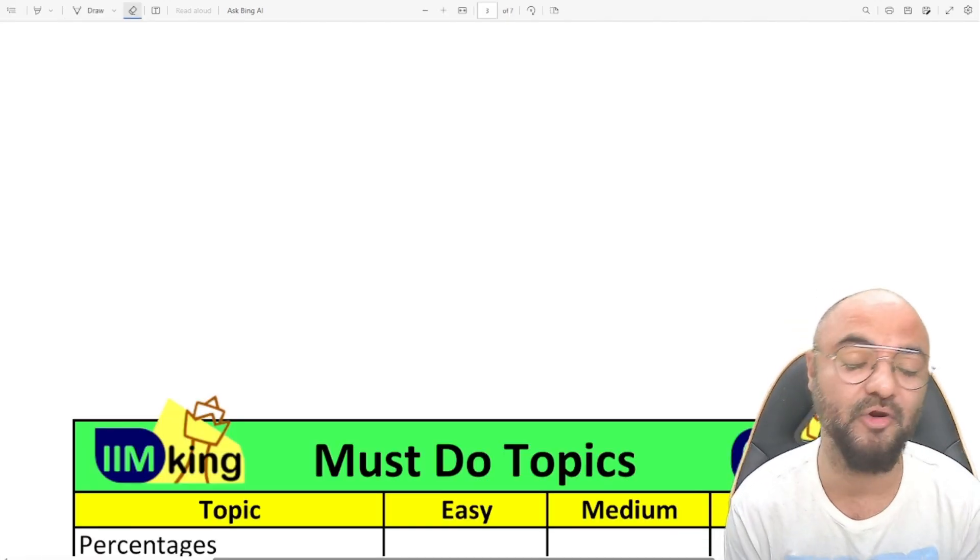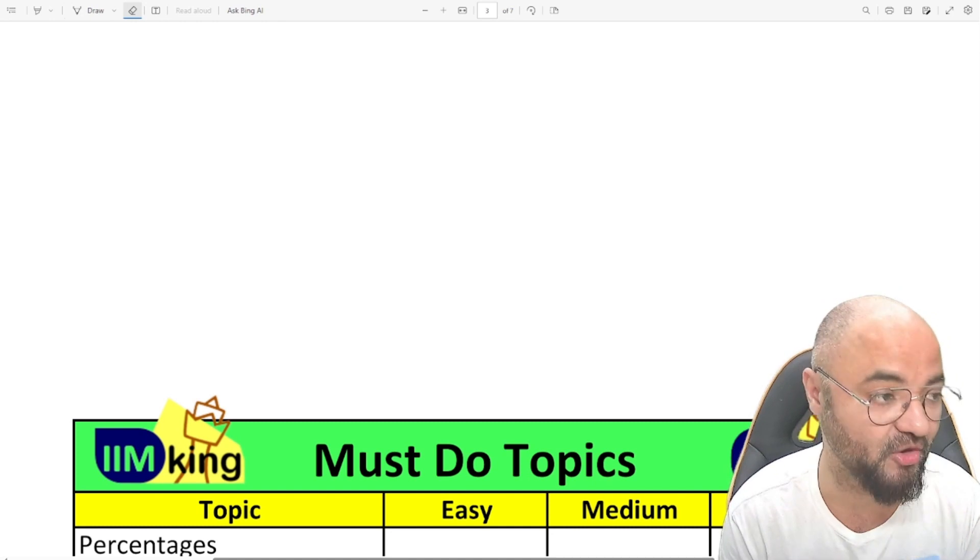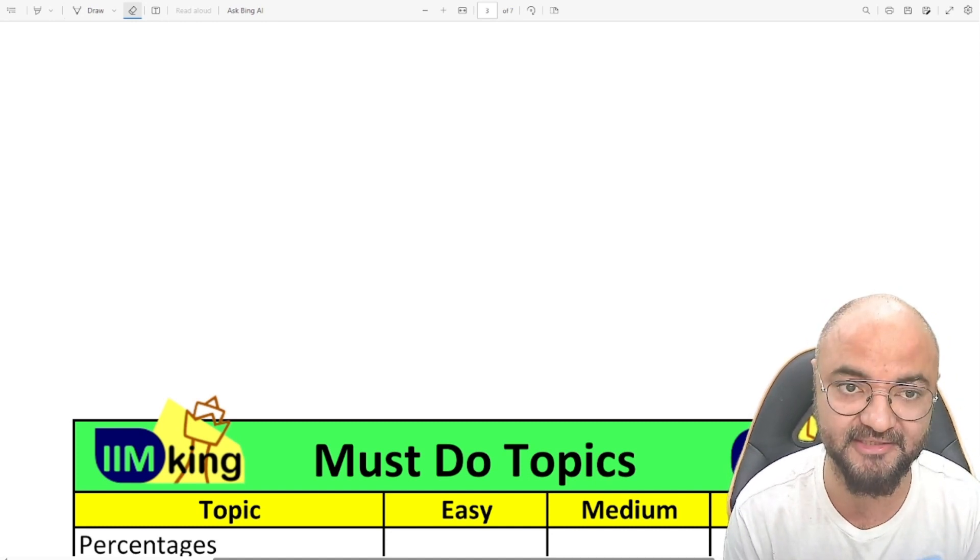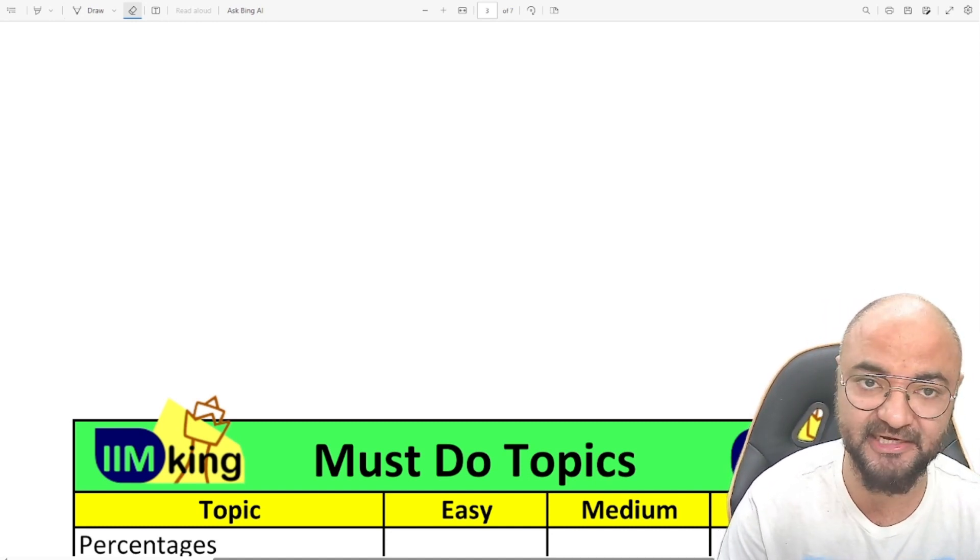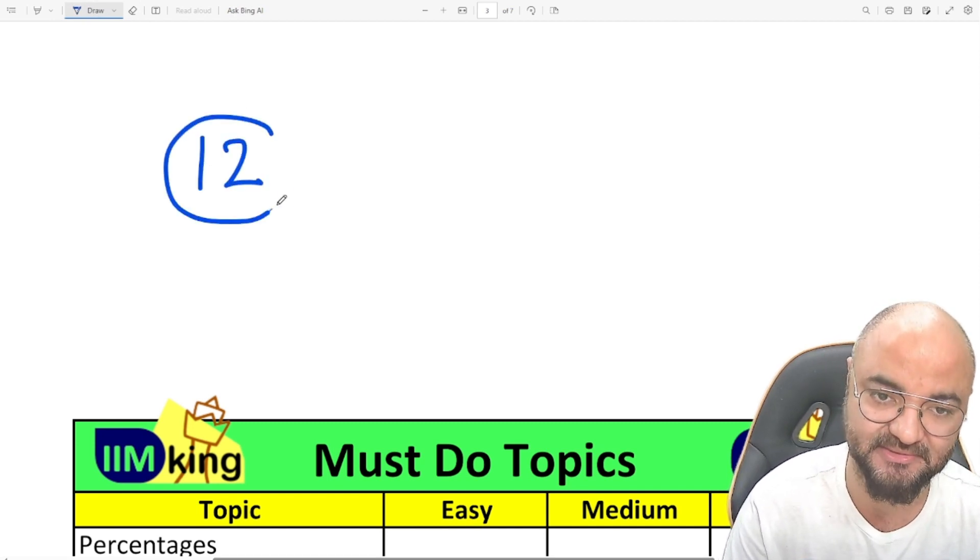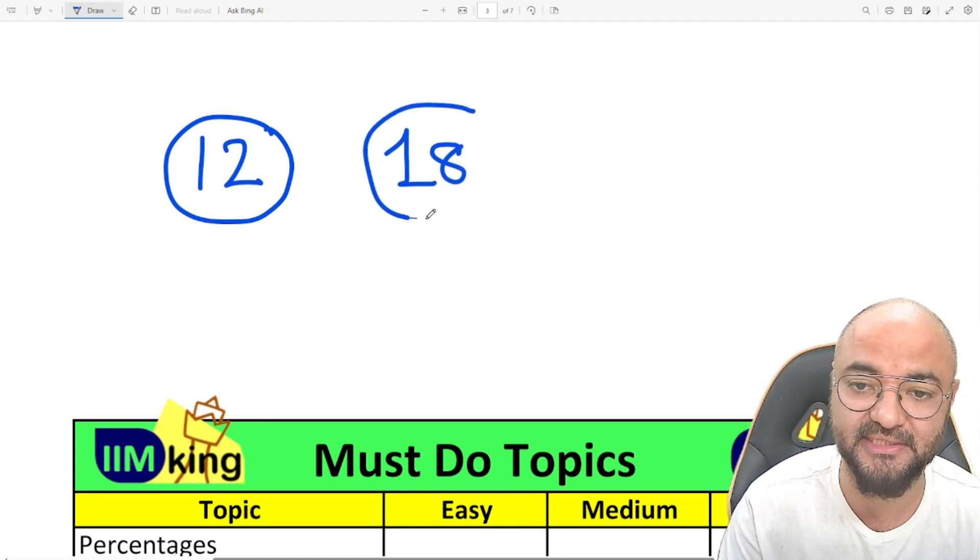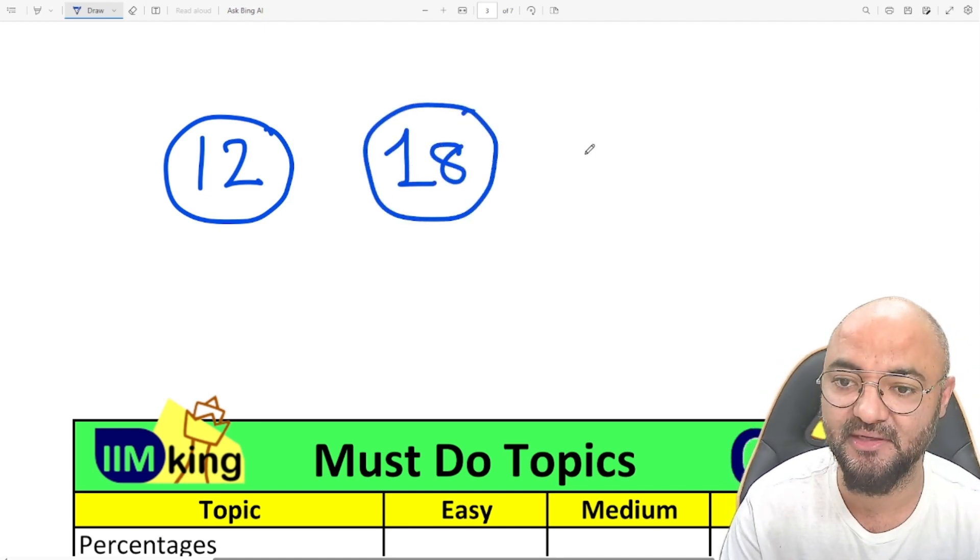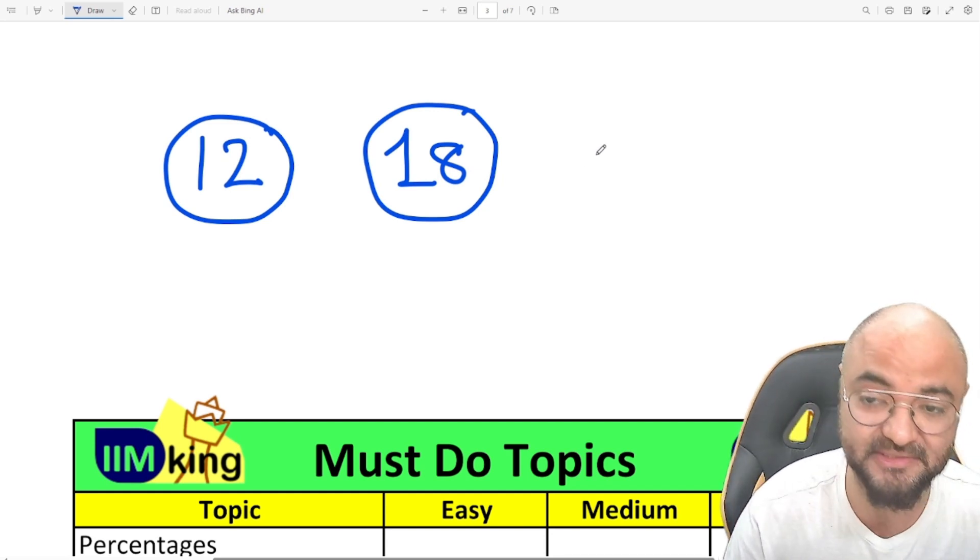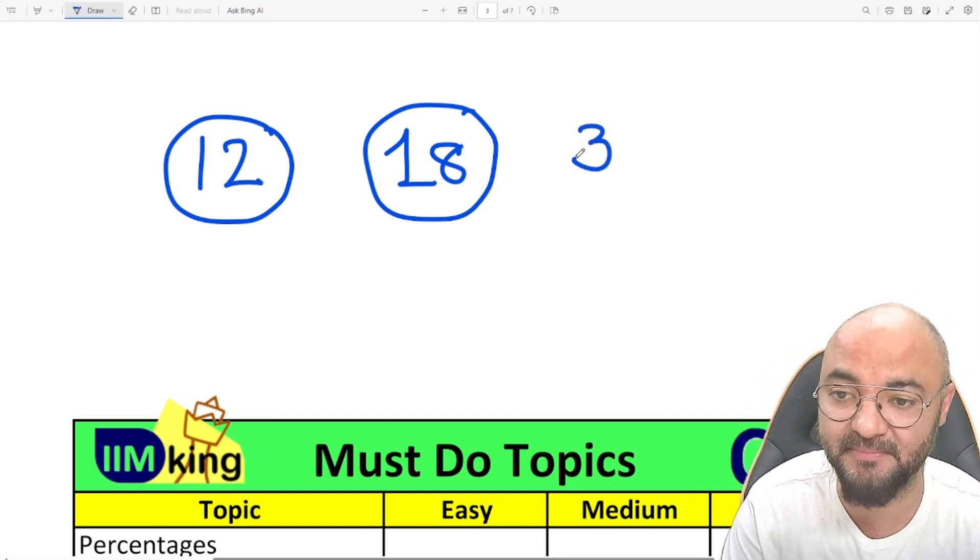Hello guys, today I'm going to give you the list of 10 topics which you have to do for the CAT exam. I have three targets: if you want 80 percentile, your target score is 12 marks. If you're targeting 90 percentile, your target score is 18 marks in the quant section. And if you're targeting 99 percentile, the target score is 30 plus marks.